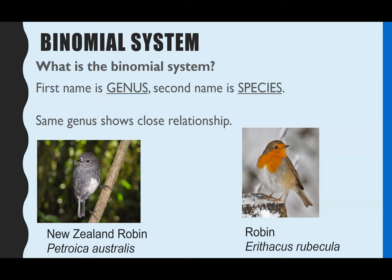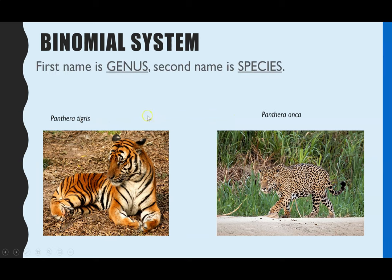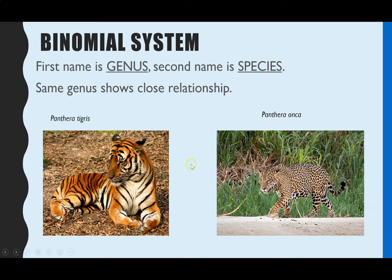So the binomial system is universal — everyone uses the same system — but it also lets you see how closely related different species are, such as whether they share the same genus. For example, a tiger and a jaguar: the common names give no indication that they're closely related, but they actually are. Although they're different species, they're both in the Panthera genus, which tells you they are closely related.